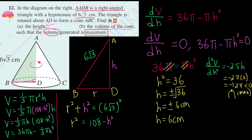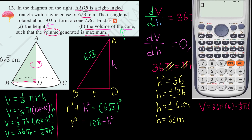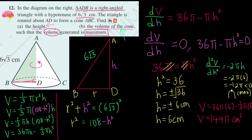We can confirm that when h = 6 cm the volume is a maximum. To find the volume, substitute h = 6 back into V = 36πh − 1/3 πh³: V = 36π(6) − 1/3 π(6³) = 216π − 72π = 144π cm³.